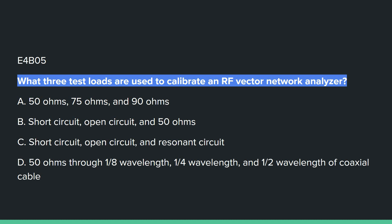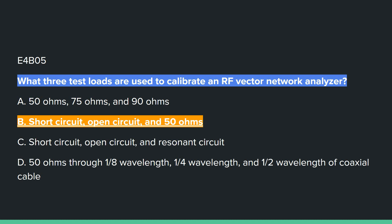E4B05: Which three test loads are used to calibrate an RF vector network analyzer? Answer B: short circuit, open circuit, and 50 ohms.